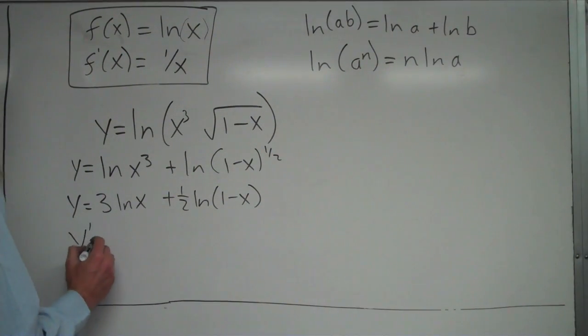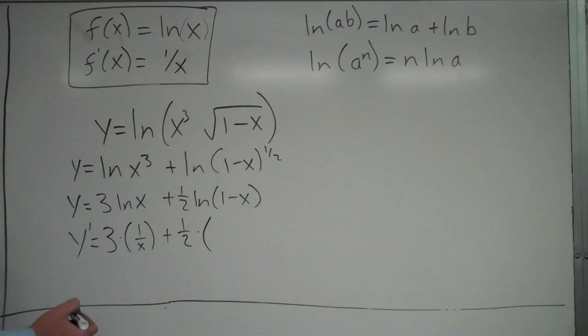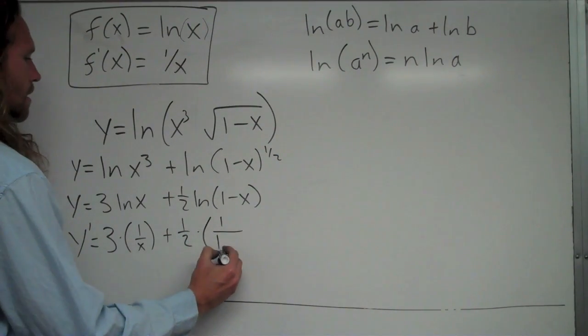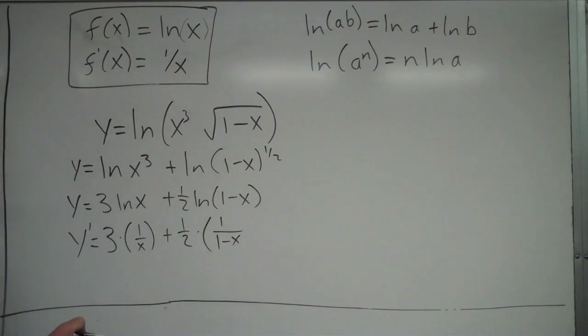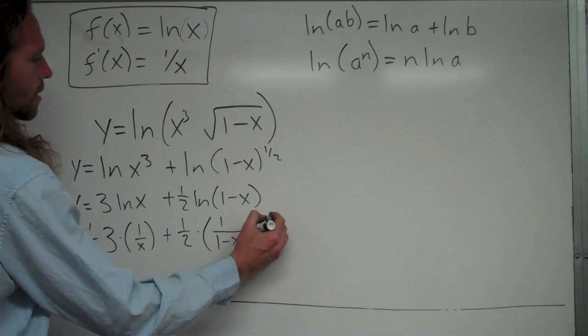Okay, so right here, I've got y prime would be equal to, okay, 3 is a constant, it goes along for the ride. The derivative of natural log of x is 1 over x plus 1 half is a constant, it goes along for the ride. And then the derivative of natural log of 1 minus x. So it's 1 over what's inside times the derivative of what's inside. You've got to be careful on this. The derivative of what's inside is negative 1.